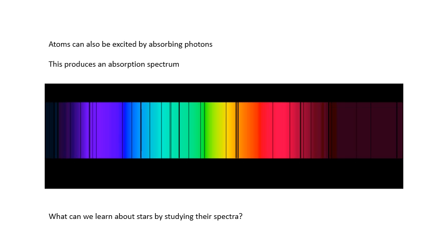What can we learn about stars by studying their spectra? Loads — we can basically figure out what they're made of. And if we know what they're made of, we can work out how old they are, what type of star they are, and what their temperature is.